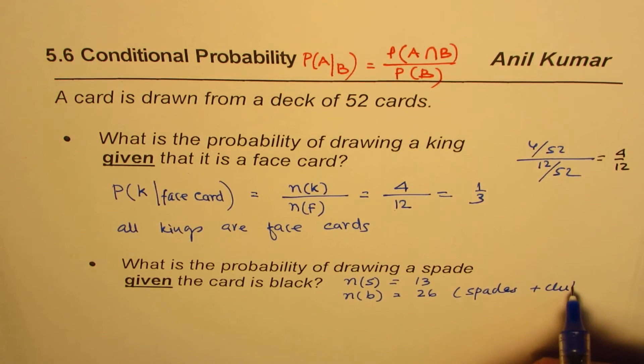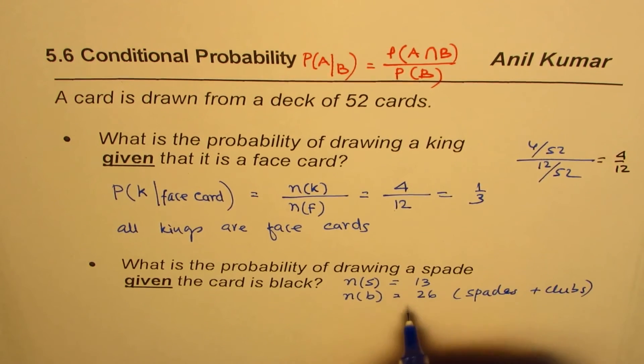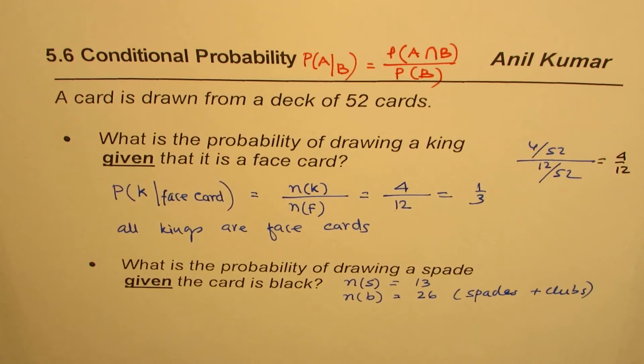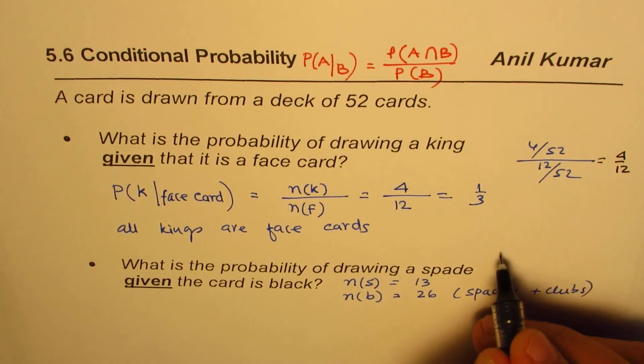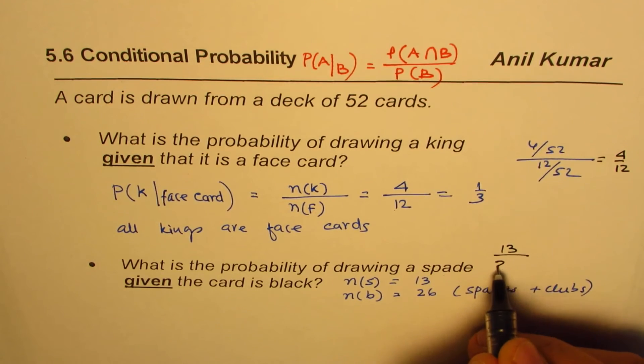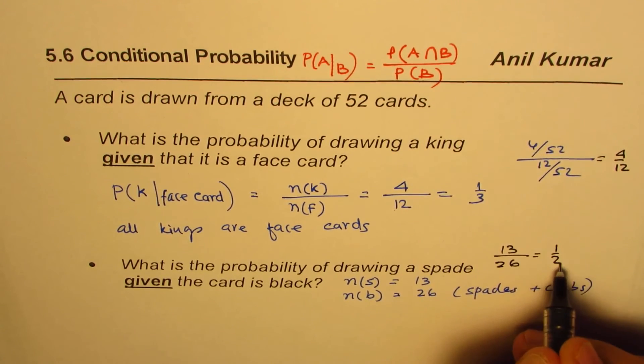plus clubs. So these are the cards which are black. So the probability is 13 over 26. Does it make sense? So I'm not using the formula, but I'm just writing the result. It is 13 over 26 = 50%, right?